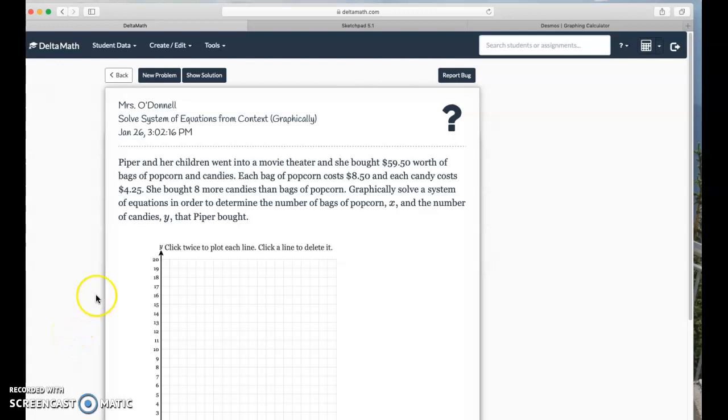Piper and her children went into a movie theater. She bought fifty nine dollars and fifty cents worth of bags of popcorn and candies. Each bag of popcorn costs eight dollars and fifty cents and each candy costs four dollars twenty five cents. She bought eight more candies than bags of popcorn. Graphically solve a system of equations in order to determine the number of bags of popcorn and the number of candies that Piper bought.